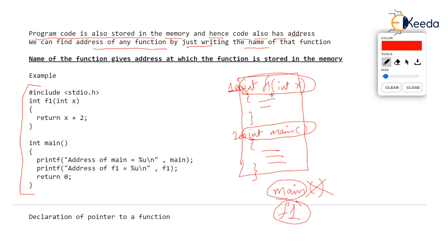I have written a simple function f1 which gets some integer x and returns that integer plus two, so its return type is integer. Then I have main. In main, I am trying to print the address of main using %u, and only the name of the function without any parenthesis is going to give the address of main. Similarly, I am trying to get the address of f1 — also a function — and I will only write the name of the function. So the output of this code may be: address of main is 100, address of f1 is 200. A great programmer can not only find address of a variable but also find address of the code by just writing the name of the function.